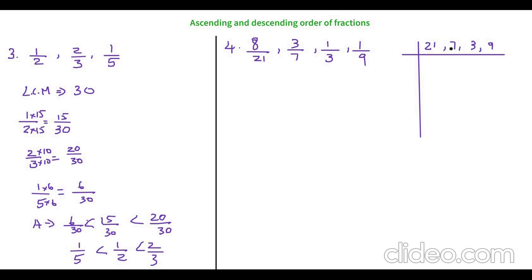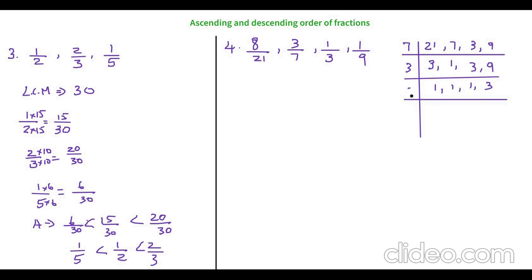Let's find the LCM of 21, 7, 3, and 9. It is divisible by either 3 or 7. First let me take 7, since 21 and 7 are both divisible by 7 — giving 3, 1, 3, and 9. Now divide again by 3, giving 1, 1, 1, and 3. Divide once more by 3 until we reach all 1s. The LCM is 7 times 3 times 3, which is 7 times 9, which equals 63.